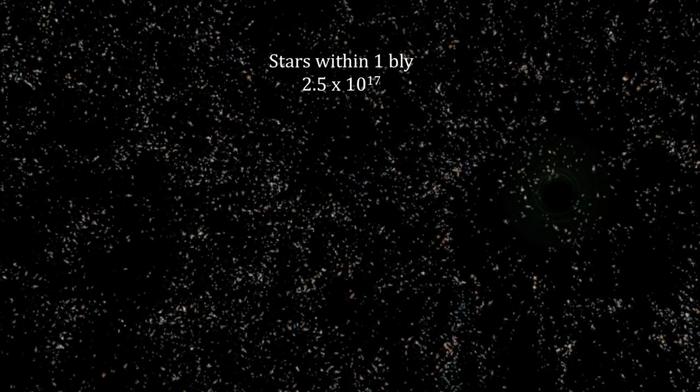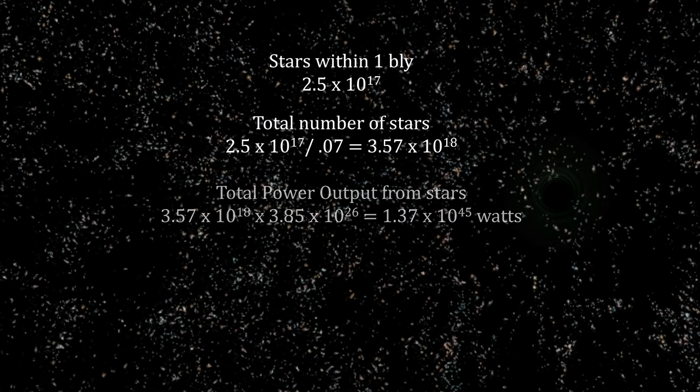From our segment on local superclusters, we saw that there are 250,000 trillion stars within 1 billion light-years. This represented around 7 percent of the total number of stars in the universe. We get the total power emitted by all the stars in the visible universe by multiplying the average watts per star times the number of stars.